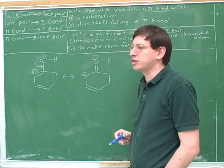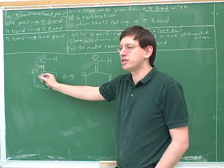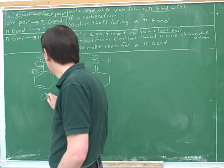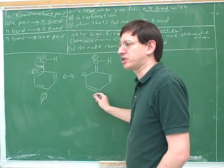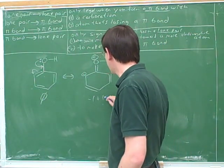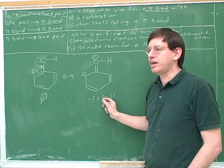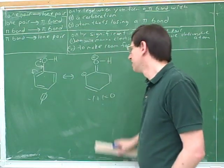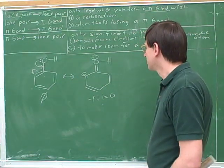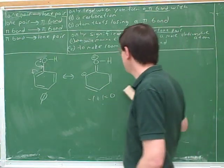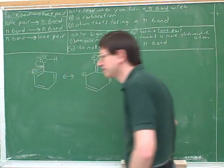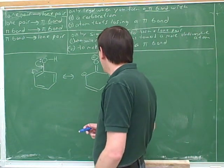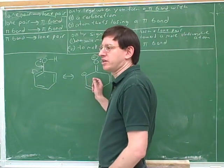We should always check to make sure that our net charges balance. What was the net charge on this picture, and what is the net charge on this picture? Negative one plus one — you should always check that the net charges balance. If they don't balance, you know you've made a mistake in interpreting the arrows. This is just a double check.